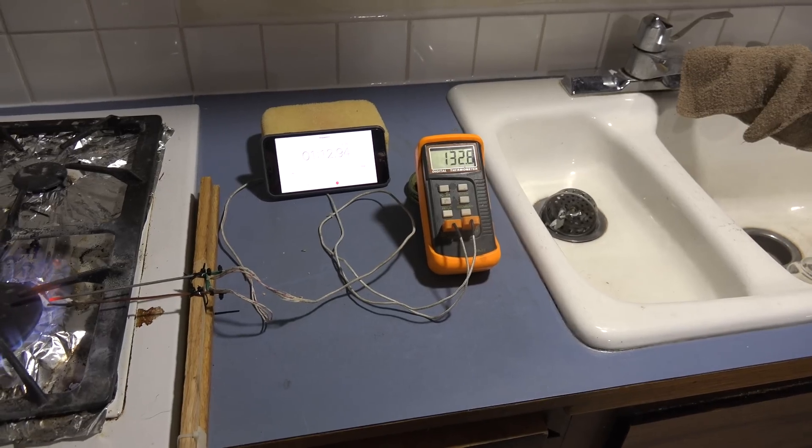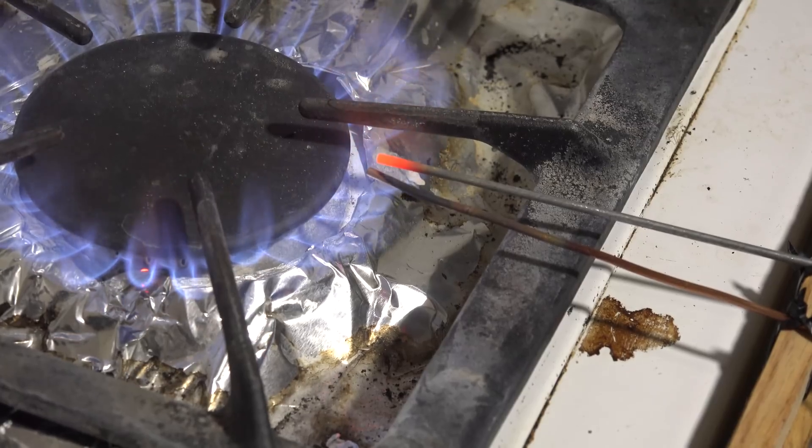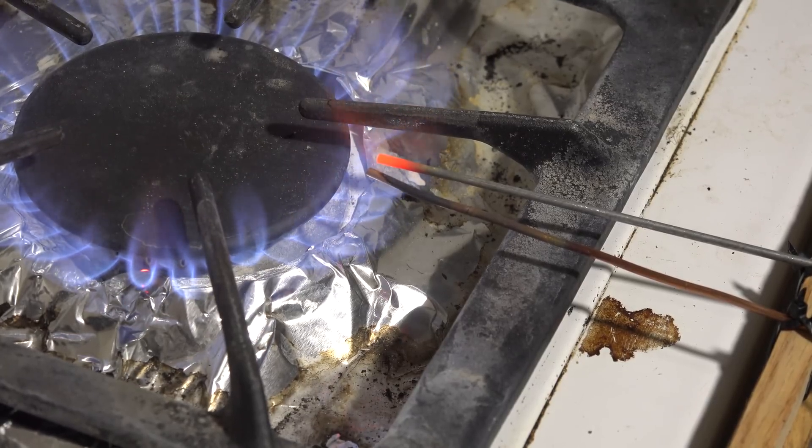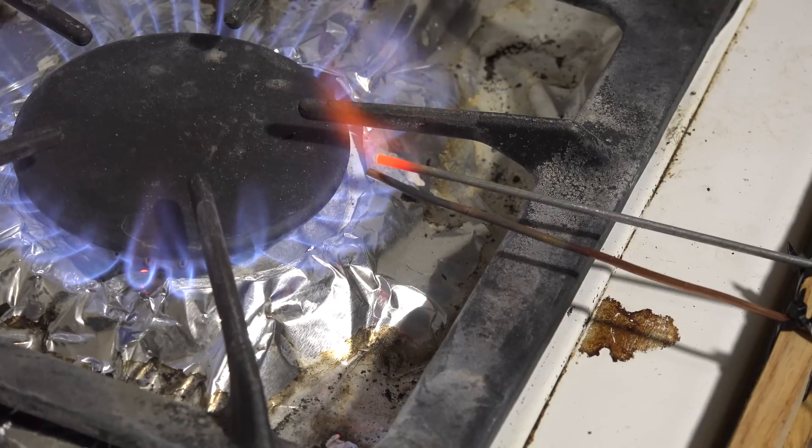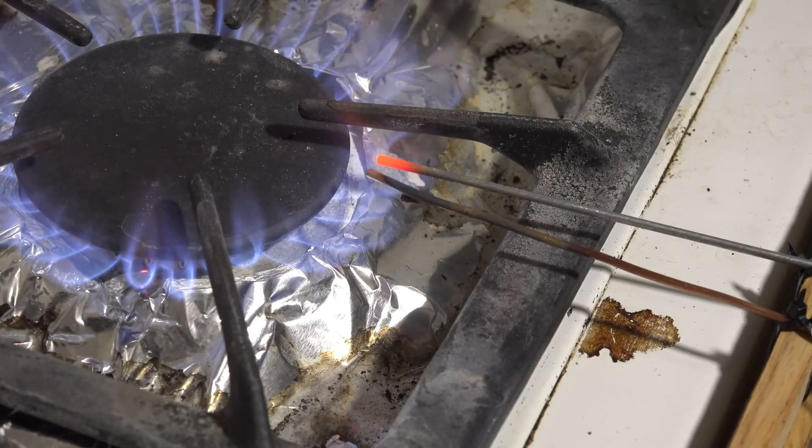Now another little illustration. Notice the steel wire is glowing red hot. The copper is not. That's because the copper is moving heat faster.